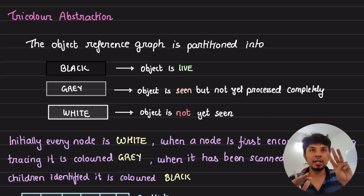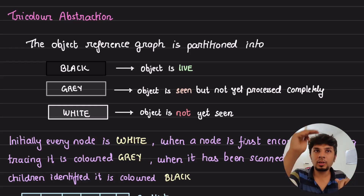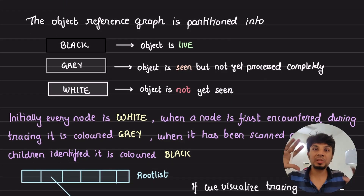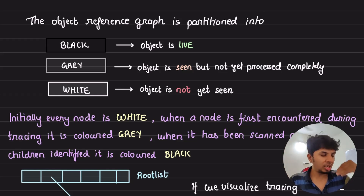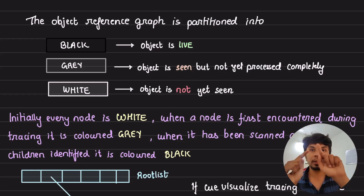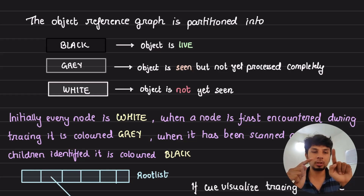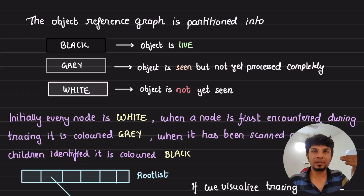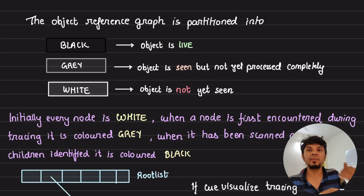So what exactly is this tricolor abstraction? The object reference graph can be partitioned into three sets: black, gray, and white. Every object by default starts as white, meaning it is not yet processed or traversed. When an object is seen — meaning we've started traversal but haven't completed processing all its children — it becomes gray. Once we've processed all children of that node, it turns black. So black objects are definitely live, gray objects are partially processed, and white objects are unprocessed.